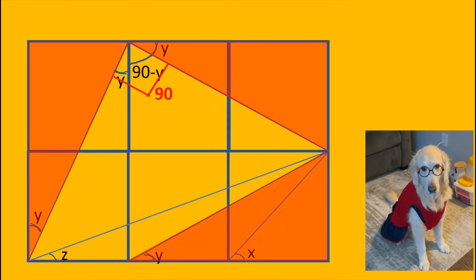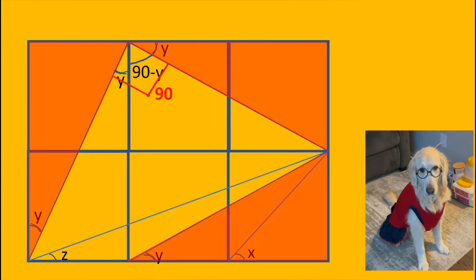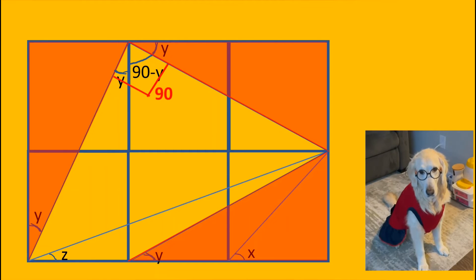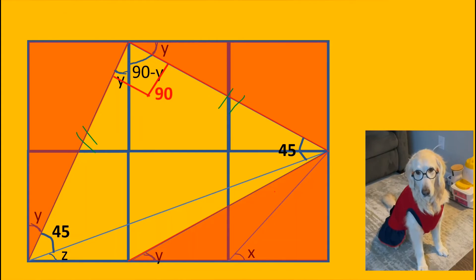We add y to 90 minus y. And we find that this angle is equal to 90. Because the sides of this right triangle are equal, the angles are equal to 45.